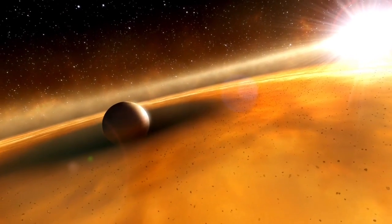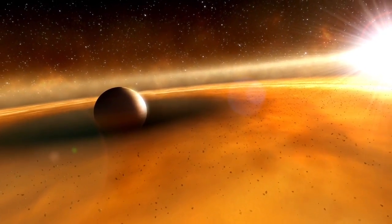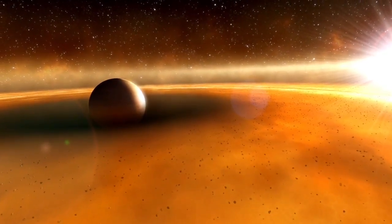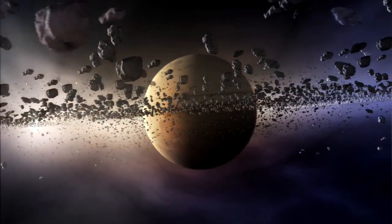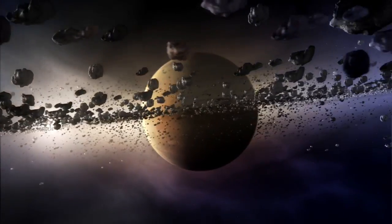The shape of the disk hints that the planet is at most three times the mass of Jupiter. And the observations show that Fomalhaut b is much brighter than expected for an object of its size.